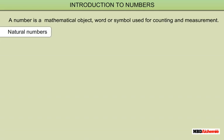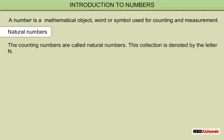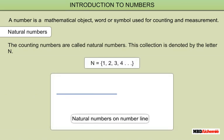Natural Numbers: the counting numbers are called natural numbers. This collection is denoted by the letter N. These are some natural numbers on the number line.